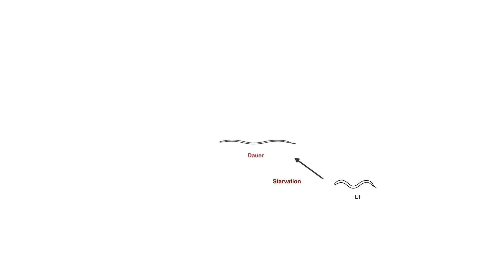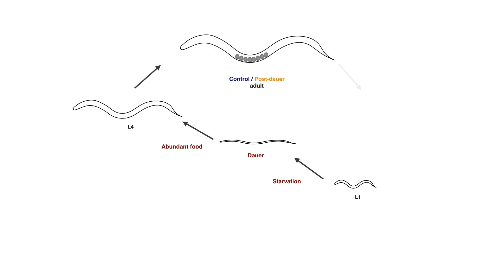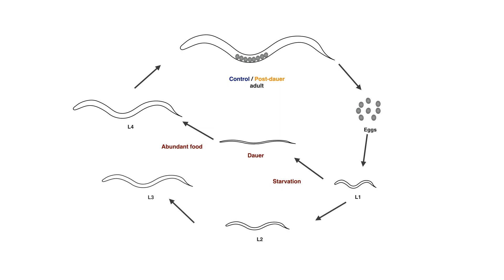When C. elegans experience harsh environmental conditions like starvation in the L1 larval stage, they enter a developmental diapause state called dauer. This is a developmental arrest where they essentially stop aging and stop growing. When conditions improve and they have access to food, they exit from the dauer stage and continue their normal life cycle again. This is very useful in the wild where food is not always available, and populations go through boom and bust cycles according to how much food is available.